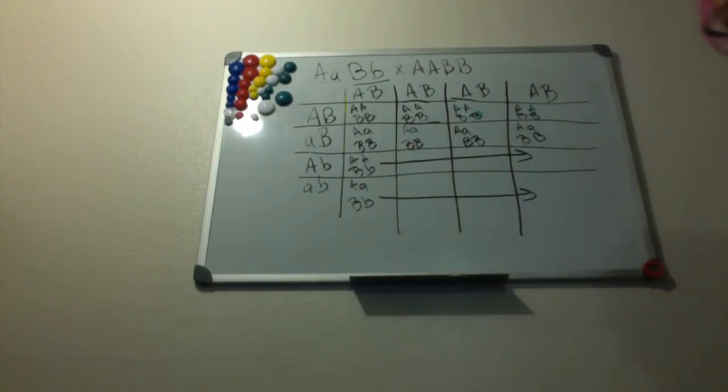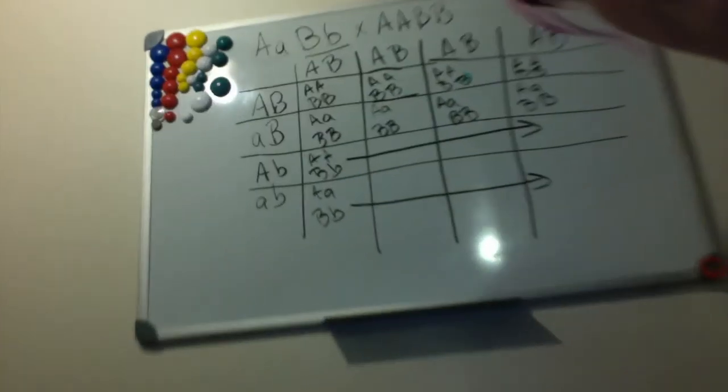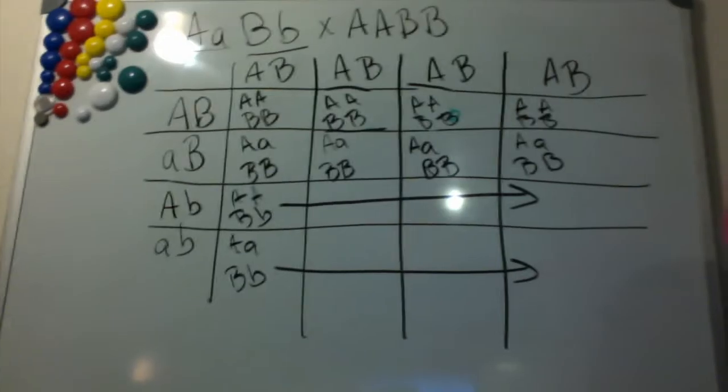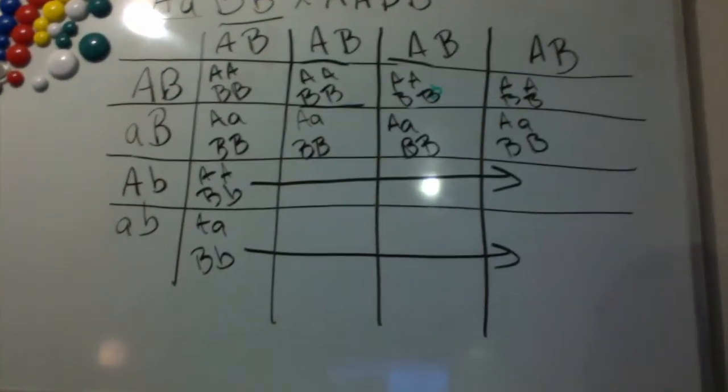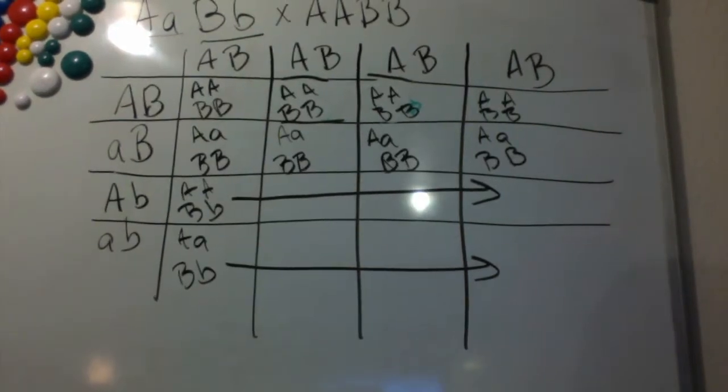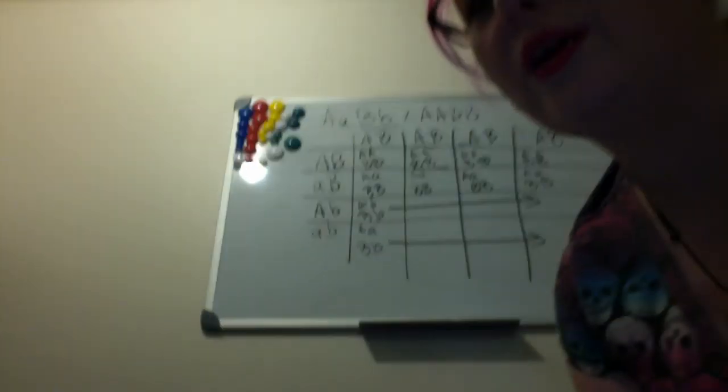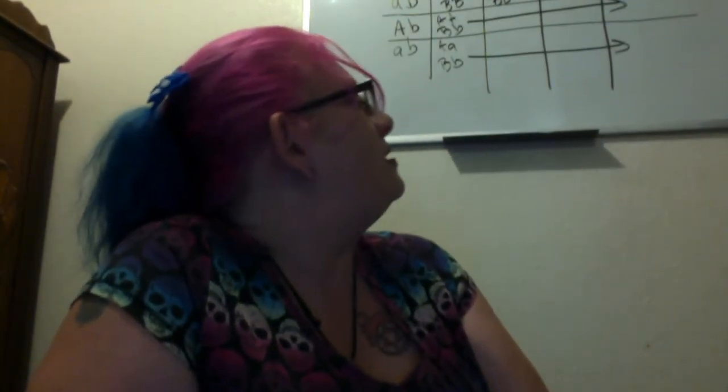You can kind of see here, let me get you a little closer, how the Punnett square works with two genes or two alleles. But that's really it for the Punnett squares. I highly recommend that if you have not worked with them or if you're still a little unsure of yourself with the Punnett squares, definitely look into them, definitely practice them. It will come in super handy.